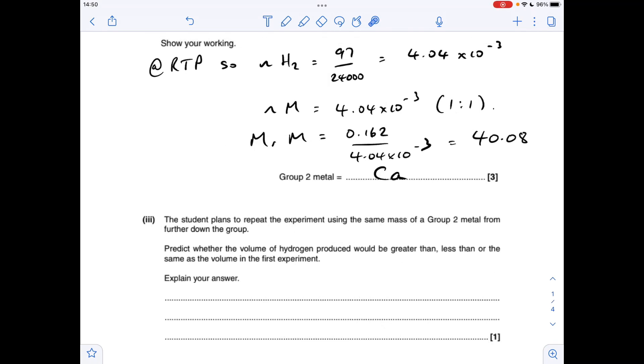And the final part of the question, so the students repeated the experiment. They've used the same mass of a group two metal, but it's from further down the group. So if it's from further down the group, it's going to have a higher MR. They're using the same mass of metal, so you're going to have fewer moles because when you do mass over MR to get the moles, you're dividing by a bigger MR. So therefore there's fewer moles of hydrogen made, which means the volume collected is going to be less.